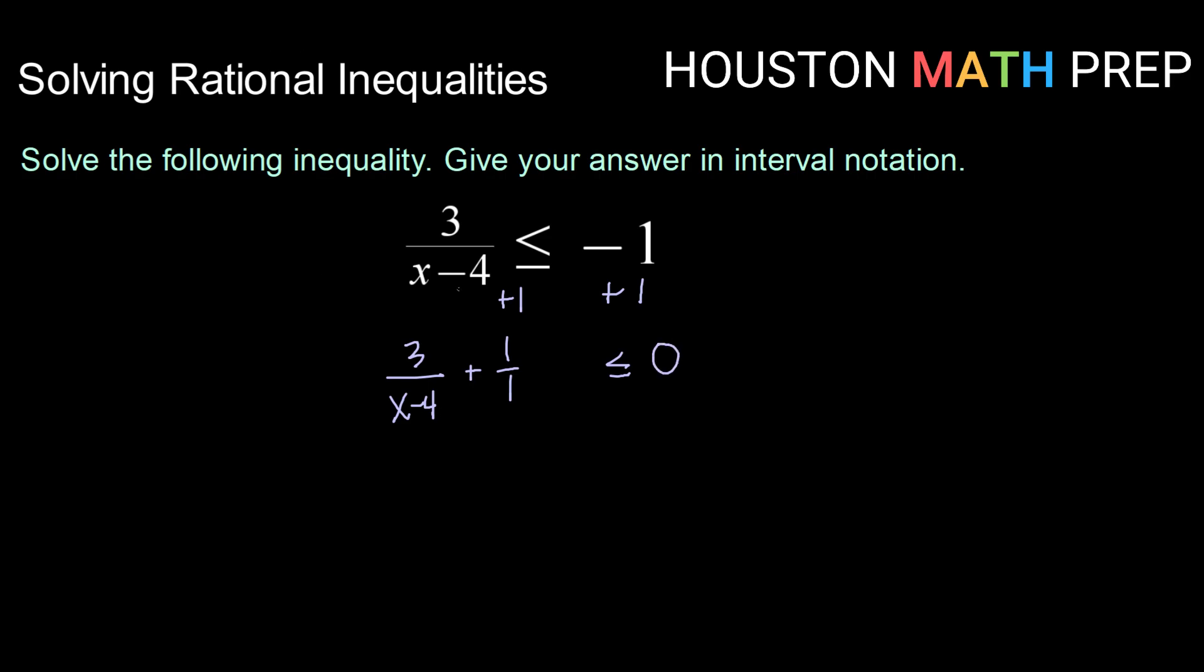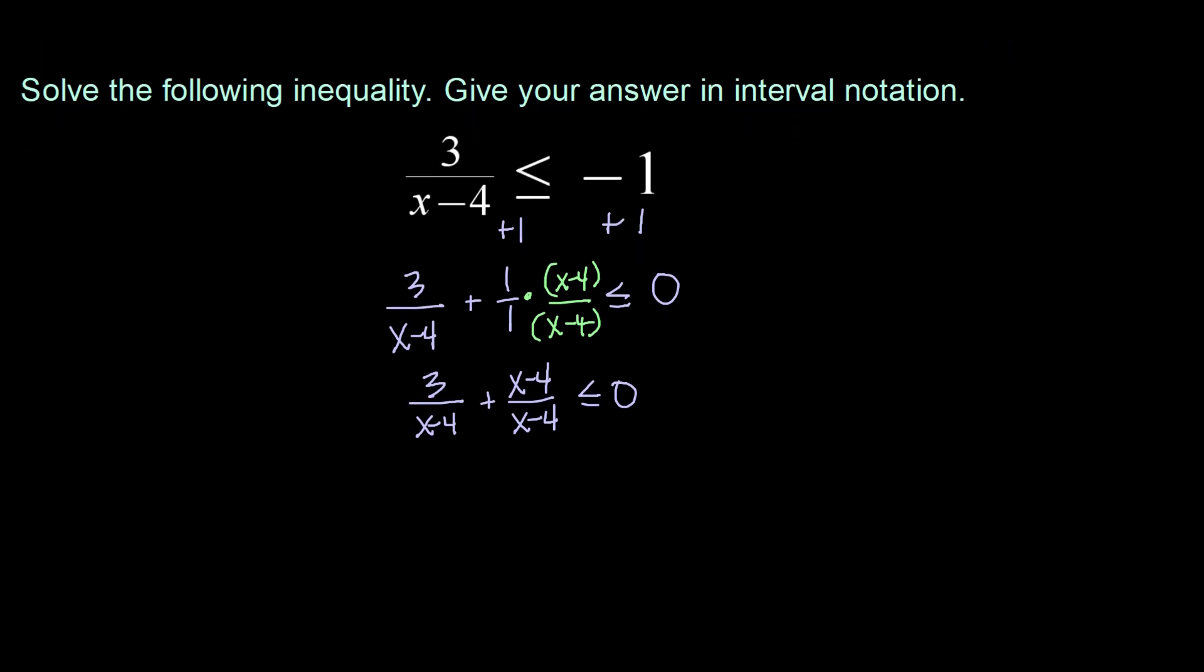On this left hand side we would like to have one single fraction. So I am going to multiply top and bottom of one over one by x minus four to get a common denominator. That's going to give me three over x minus four plus x minus four over x minus four is less than or equal to zero.